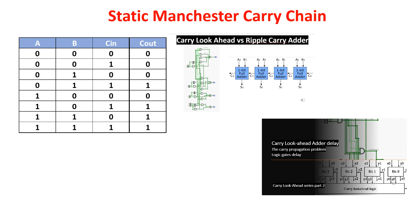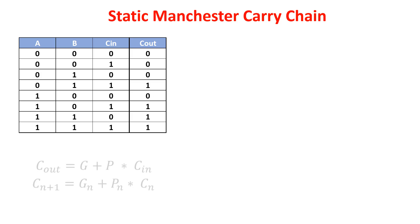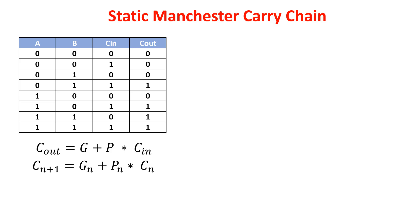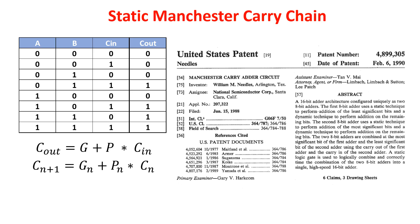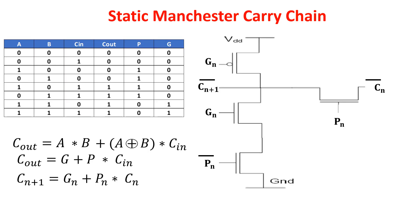We need a faster logic to implement these equations, and here comes the 1990 patent of William Needles, the Manchester Carry adder circuit. First we see the static cell implementing the carry function. It is composed by four transistors. Here the previous carry arrives. The bar above the letter means that this is the opposite of the carry in, and we produce at the output the opposite of the carry out. So we need to add an inverter to get the proper carry out.